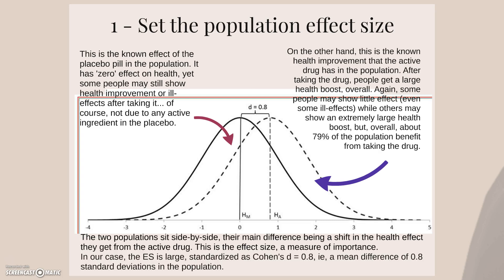The two populations sit side by side. There may be a difference being a shift in the health effect they get from the active drug. This is the effect size, a measure of importance. In our case, the effect size is large, standardized as Cohen's D equals 0.8, which is a mean difference of 0.8 standard deviations between the two groups in the population.